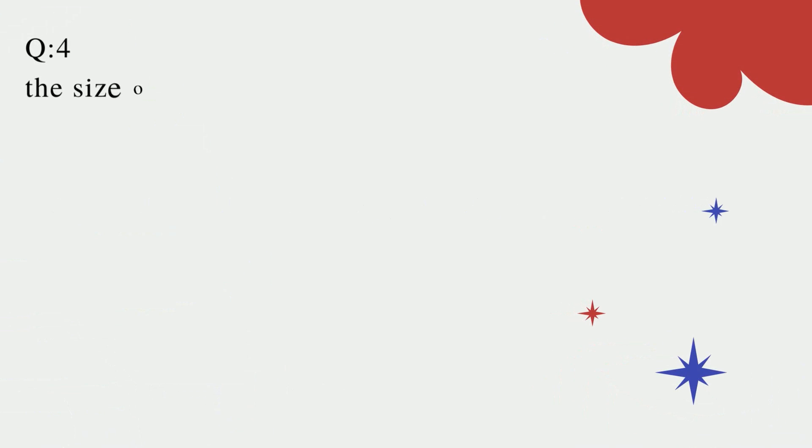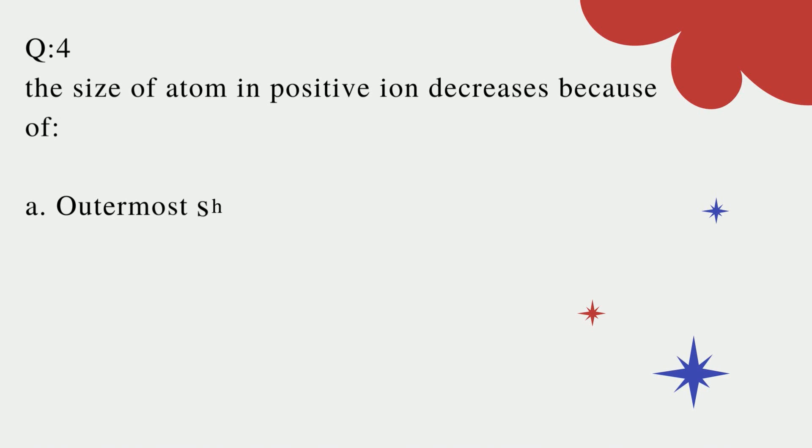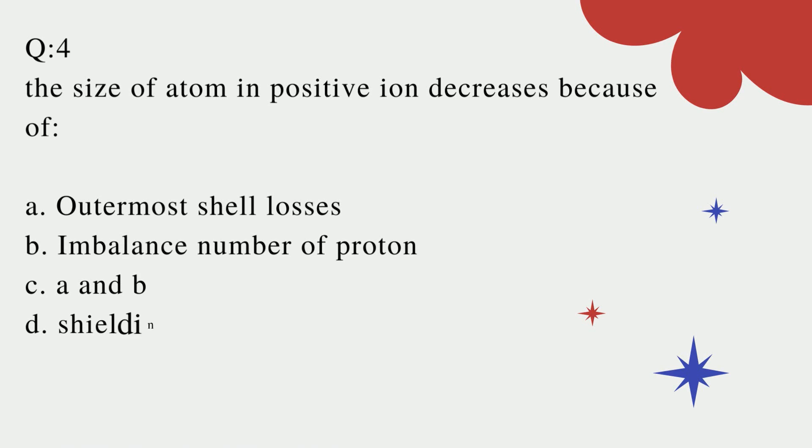Question number four: The size of atom in positive ion decreases because of? A. Outermost shell losses? B. Imbalance number of proton? C. A and B? D. Shielding effect increases? Correct option is A.